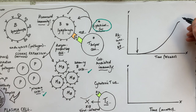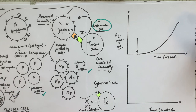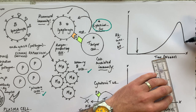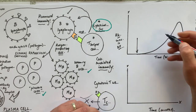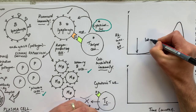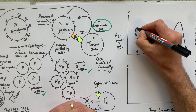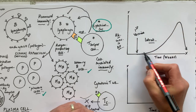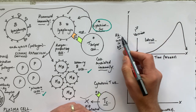The antibody concentration peaks — giving maximum agglutination of the pathogen and phagocytosis to clear the infection. After the infection is cleared, the antibody in the blood starts to fall. This period after the first vaccine injection is called the latent period, during which antibody concentration is initially low.